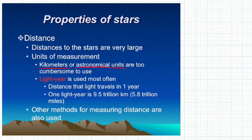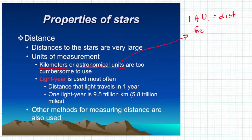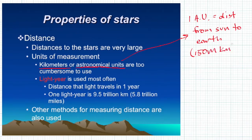An astronomical unit — 1 AU — is the distance from the sun to the Earth, and that's about 150 million kilometers. So we can use that chunk of space; we call that an astronomical unit.